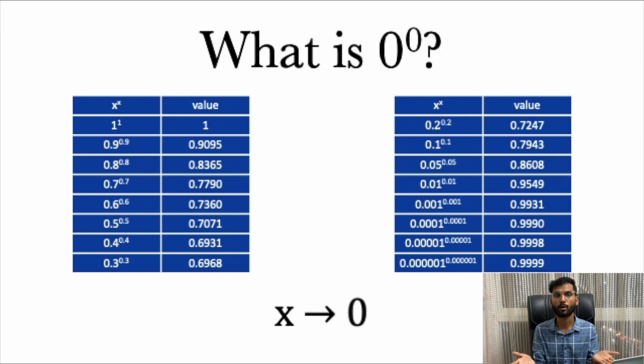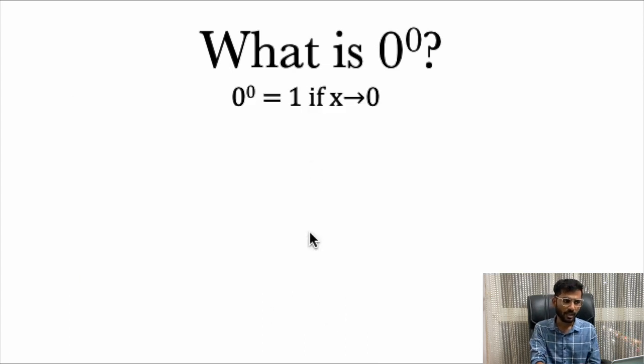By this can we come to the conclusion that 0^0 equals to 1? Yes, if x tends to 0, that means x is going very close to zero. It may be not equals to zero but if x is trying to be zero, is going very close to zero, then 0^0 is 1. In this case x is nothing but x^x.